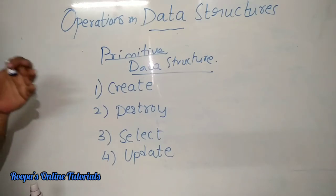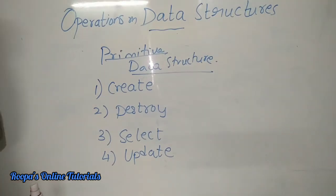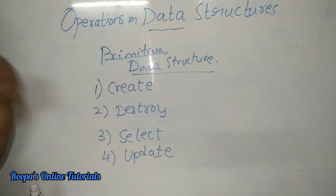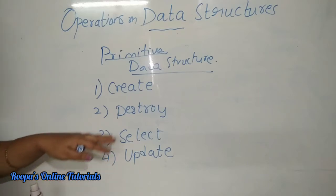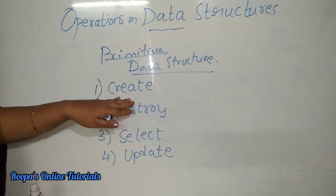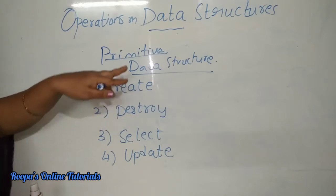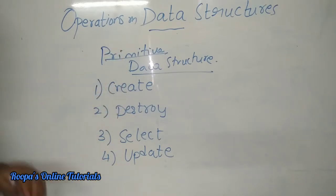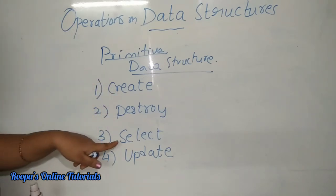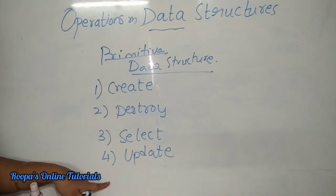You may have heard of Brahma, Vishnu, and Maheshwara — the Trinity in Hindu mythology. Brahma is the creator, Vishnu is the sustainer, and Shiva is the destroyer. So here, the sustainer corresponds to select and update. These are the operations available for primitive data structures: create, destroy, select, and update.